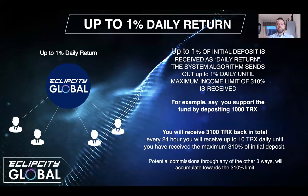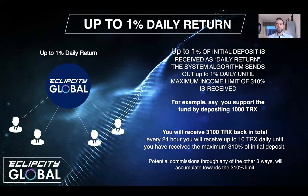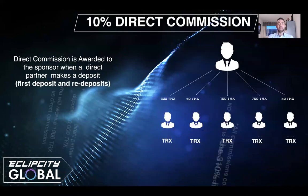The up-to-1% daily return is received from your initial deposit. The system algorithm sends out up to 1% daily until the maximum income limit of 310% is reached — every 24 hours since your deposit. For example, if you deposit 1,000 Tron, you can receive 3,100 Tron in total, receiving up to 10 Tron every 24 hours. All potential commissions through any of the other three ways also accumulate towards the 310% limit.